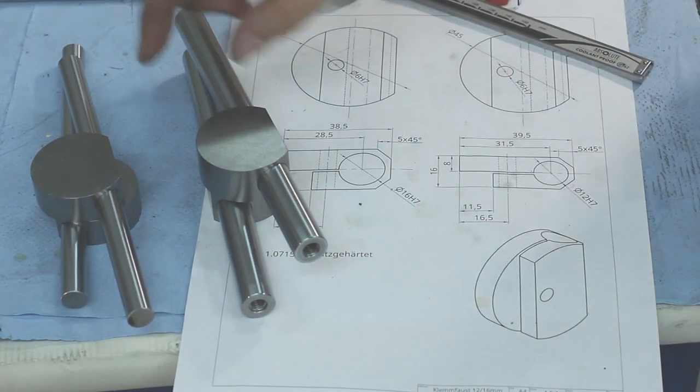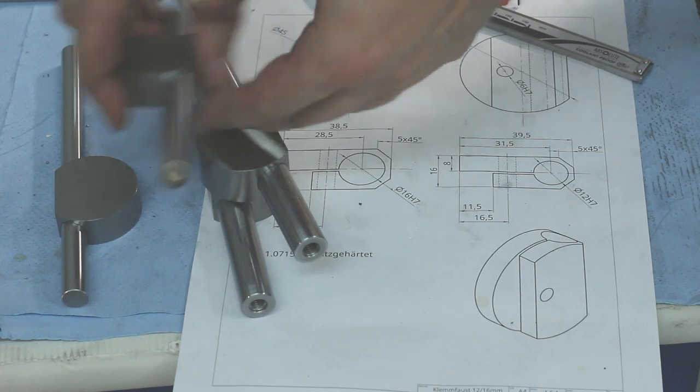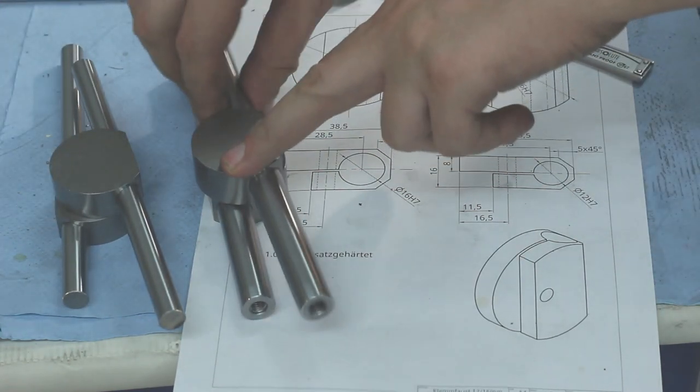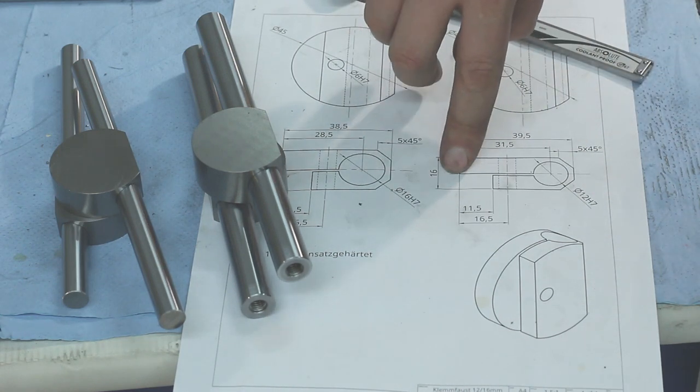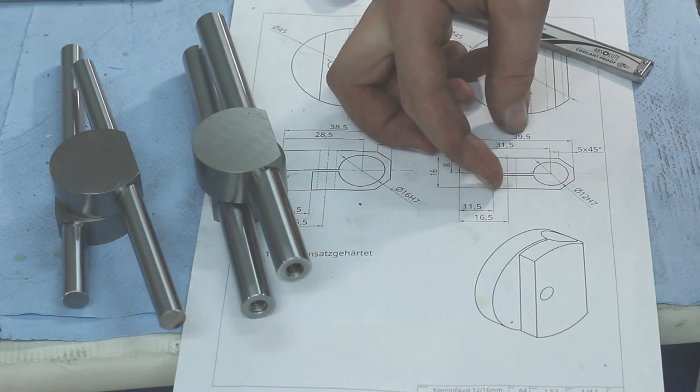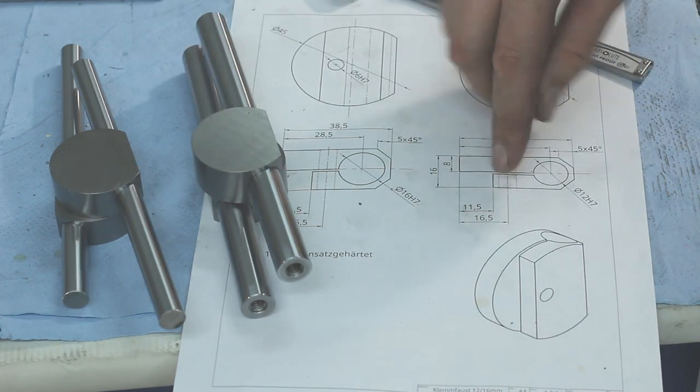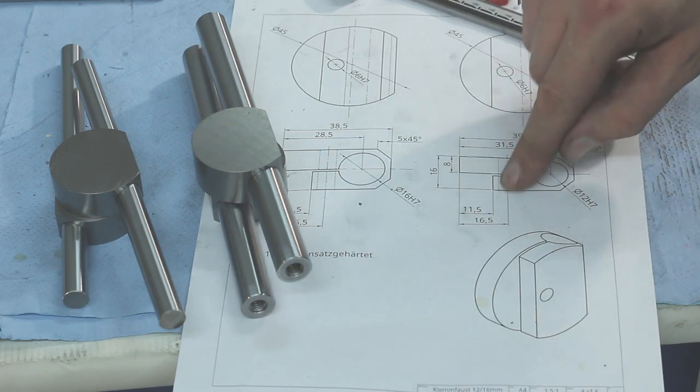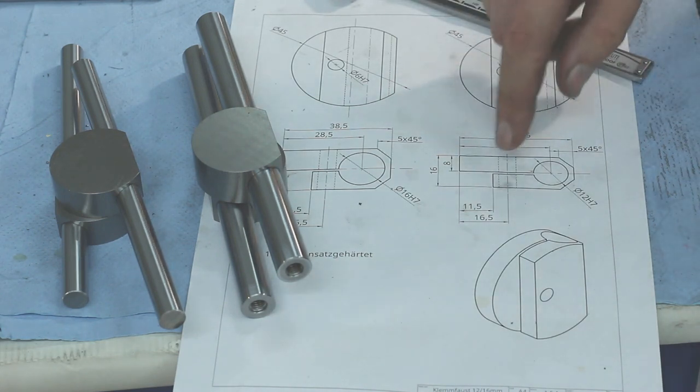I got them all reamed to twelve and sixteen millimeters. All are a nice sliding fit. Next I'm going to cut the slit to make them flexible so they can clamp around the rod, and also cut out this chunk of material so I have less milling work to do.